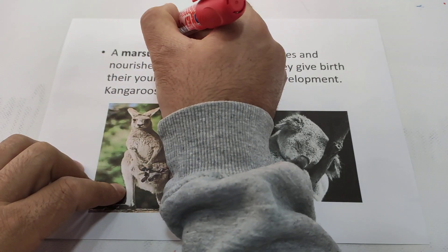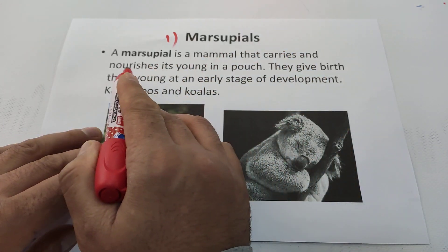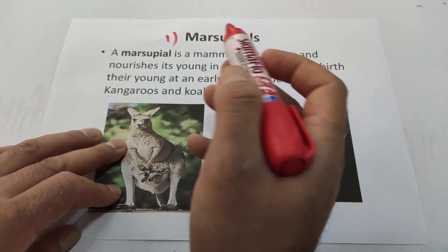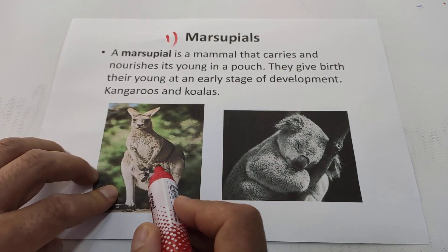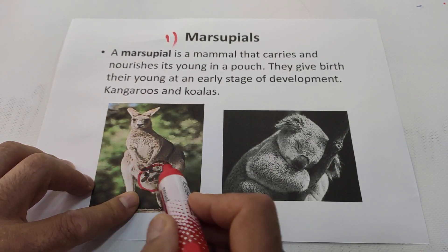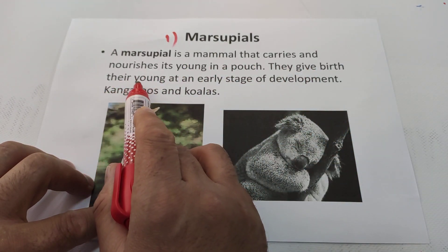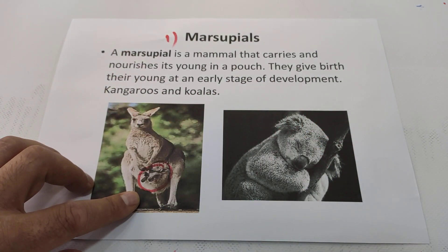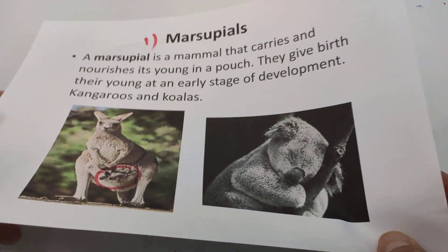The third kind of mammals is called marsupials. A marsupial is a mammal that carries and nurses its young in a pouch. As you can see, the kangaroo has a pocket here and feeds its baby in the pouch. Marsupials give birth to their young at an early stage of development. Examples of marsupials are the kangaroo and the koala. That is the end of our topic.